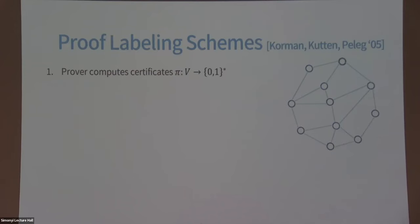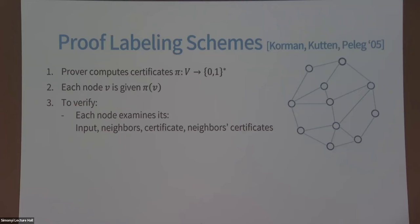The prover computes certificates for the nodes — like a witness in NP. It gives every node its own certificate, which can differ per node. Then the nodes check if they're happy with this witness. Every node looks at its own certificate, the certificates of its neighbors, and its own input, and decides whether to accept or reject. This decision is made individually by each node. The witness is considered accepted only if everybody accepts it; it's enough for one node to say it's not convinced, and the whole thing is rejected.